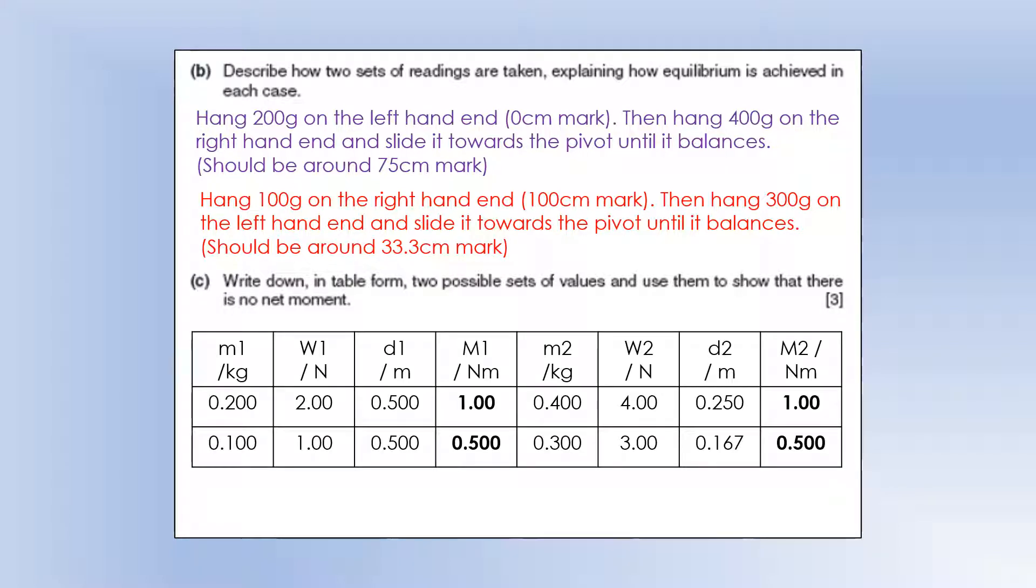And then in terms of actually recording that and showing that that is indeed an equilibrium, we've got the masses, the weight force, the distance from the pivot, and then the moments. And we can see in each of those two cases, the moments end up being equal and opposite because they're rotating it in opposite directions. And that finishes this moments video.